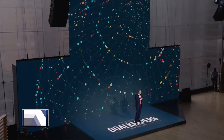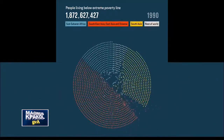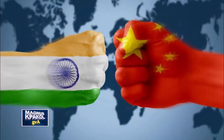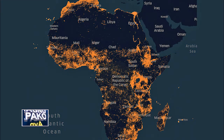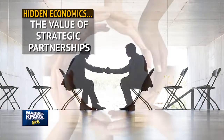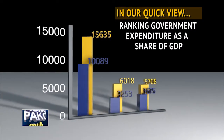Truly, the world is fortunate to have Bill Gates. As we will see, he takes us through a gripping statistical story of where the world is in the fight against poverty, and how China and India have succeeded using human capital. Concluding, he suggests that although the battle ahead may be tougher for Africa, through human capital development and ingenuity, Africa can also win. But before this, in our hidden economics, we look at the value of strategic partnerships. Now, up next in our quick view, we run countries by the share of government expenditure to GDP.